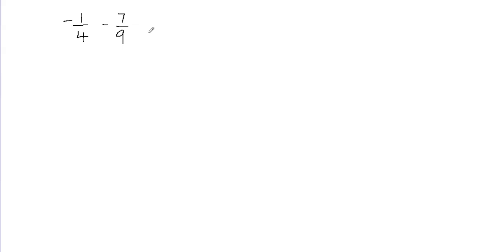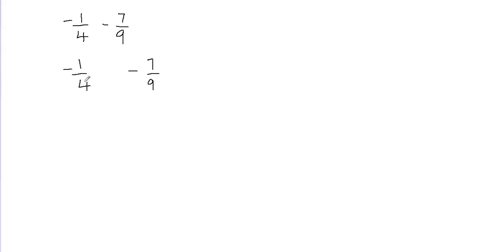But in this particular question I'm going to tell you a different strategy to add or subtract the fractions. So I'm going to write both fractions: negative 1 over 4, then a minus sign, then 7 over 9. Since I have different denominators, I'm going to multiply my fractions by a number.